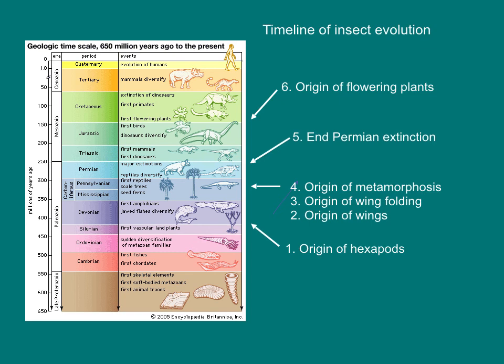Let's review the major events in insect evolution. The hexapods — in other words, insects — first appeared in the fossil record in the early Devonian as small, wingless, litter-dwelling insects. Three major events occurred in the Carboniferous: the origin of wings, the origin of wing folding, and the origin of metamorphosis. The End Permian extinction erased many Paleozoic insect orders — dragonflies and mayflies are the only remaining living representatives of these early winged insect lineages. Finally, the origin of flowering plants created new opportunities for insects and led to a final major radiation in insect diversity.